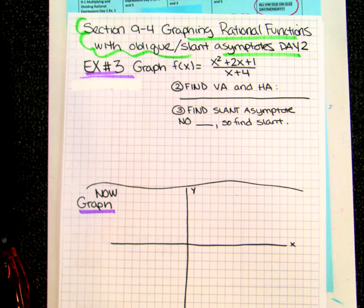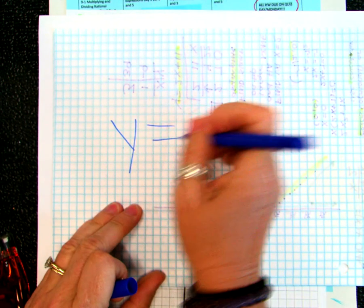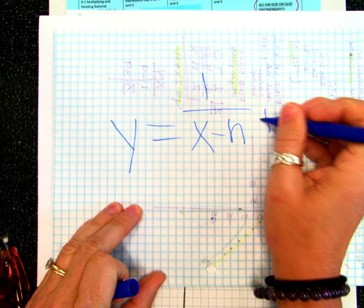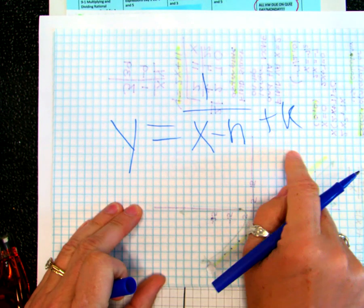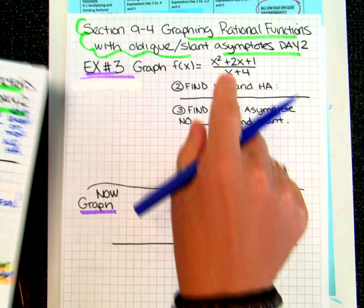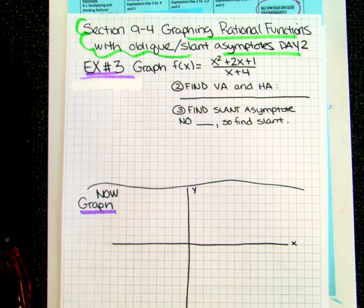Last lesson for section 9-4. So when we look at these, we're going to be graphing rational functions again. We've graphed them over and over. We've graphed ones with a number on top, and we move them left and right and up and down — those are our traditional ones. Then we had ones yesterday where something cancels out when we factor, and when they cancel, it makes a hole. So those are the two types we've seen so far.